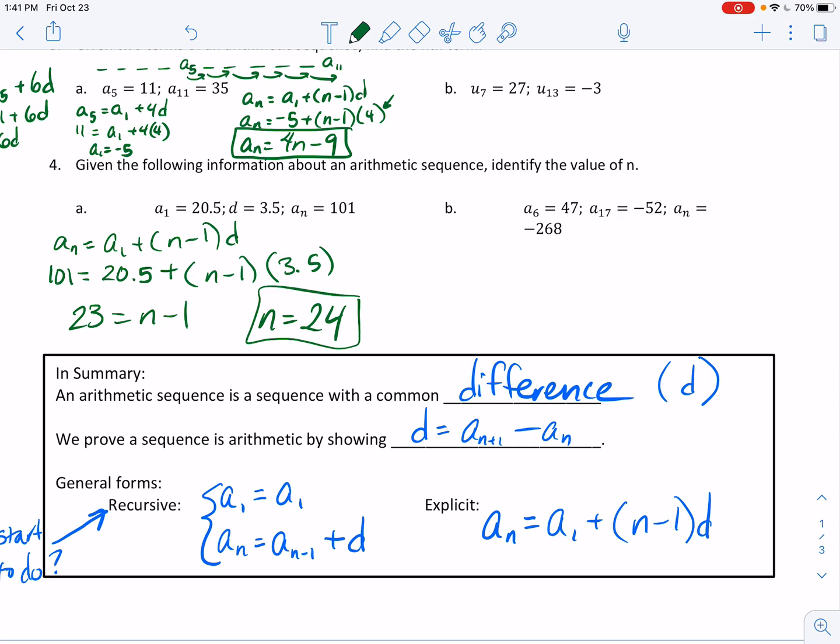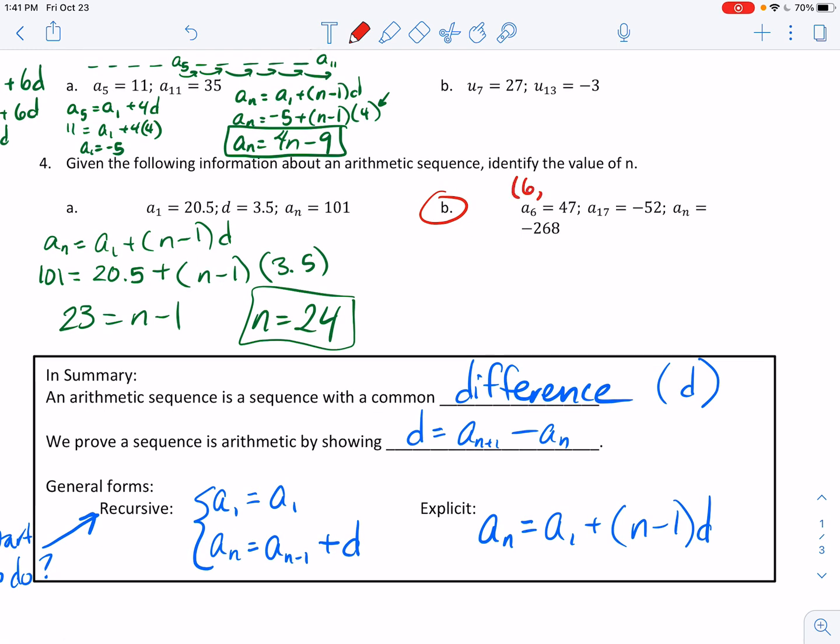Let me say this really fast on this part B right here. Another thing that we can do is because it's arithmetic, things are linear. And so you could think of this as being the 0.647 where the n is your x value and your a sub n, the value of a sub n is your y. And so then you could think of this as the 0.17, negative 52, and then you can find slope and go from there. So all of that works the same way. There's nothing wrong with that.